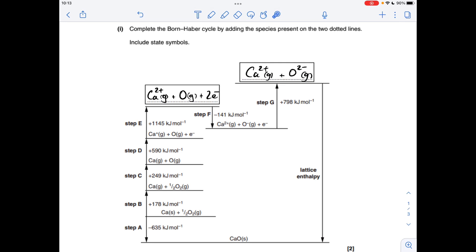So we have to name step A. So what's going on in step A? We're going from the elements to the compound, calcium oxide. So that is the enthalpy of formation of calcium oxide.